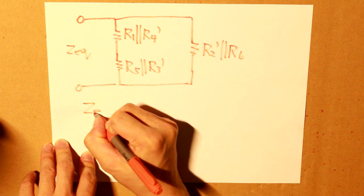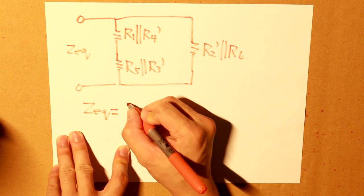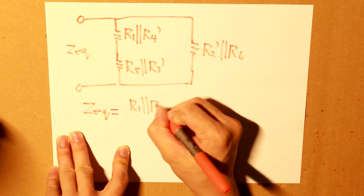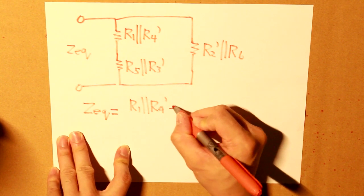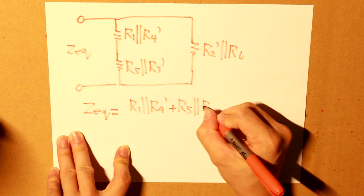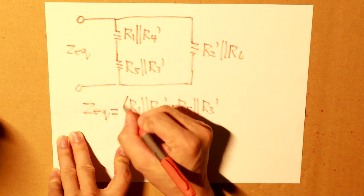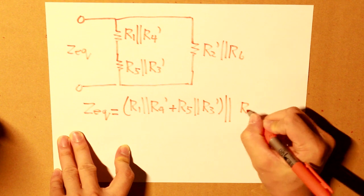Our equivalent resistance Zeq is equal to R1. This term right here, as you can see, this is in series and this whole term is in parallel with that.